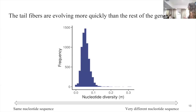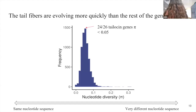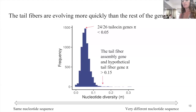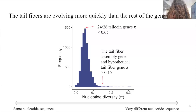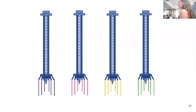Genes to the left of the plot have the exact same nucleotide sequence across the population; genes to the right have very different sequences across strains. What we found is that 24 of the 26 talosin genes had a nucleotide diversity of less than 0.05, which was the genome-wide average, suggesting they're evolving at about the same rate as the rest of the bacterial genome. Really excitingly, the tail fiber assembly gene and tail fiber gene had a nucleotide diversity of greater than 0.15, significantly greater than the rest of the talosin genes and the genome-wide average. This suggests tail fiber variation within this population could predict killing or be responsible for the different killing spectrum of different pathogens.